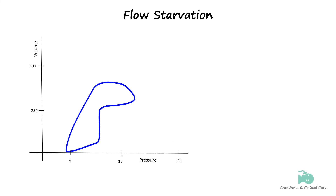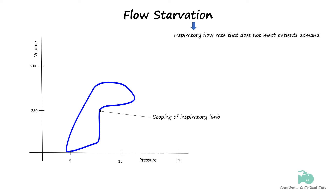Flow starvation occurs when the flow rate provided by the mechanical ventilator is insufficient to meet the patient's inspiratory demand. This mismatch can cause the patient to exert additional effort to draw in more air, leading to discomfort and increased work of breathing. When this happens, a scooped-out appearance of the inspiratory limb is observed, indicating that the set flow rate is insufficient and causing the patient to generate additional negative pressure.